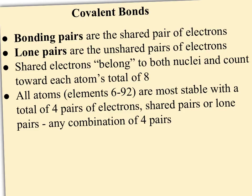Shared electrons count toward the total of each atom's eight electrons. All atoms between elements 6 and 92 are going to be most stable with four pairs of electrons, or a total of eight — remember, eight is great. It doesn't matter if they're shared pairs or lone pairs, but other than noble gases, no elements naturally have four lone pairs, so most atoms are going to have to have at least one shared pair, and maybe two or three.